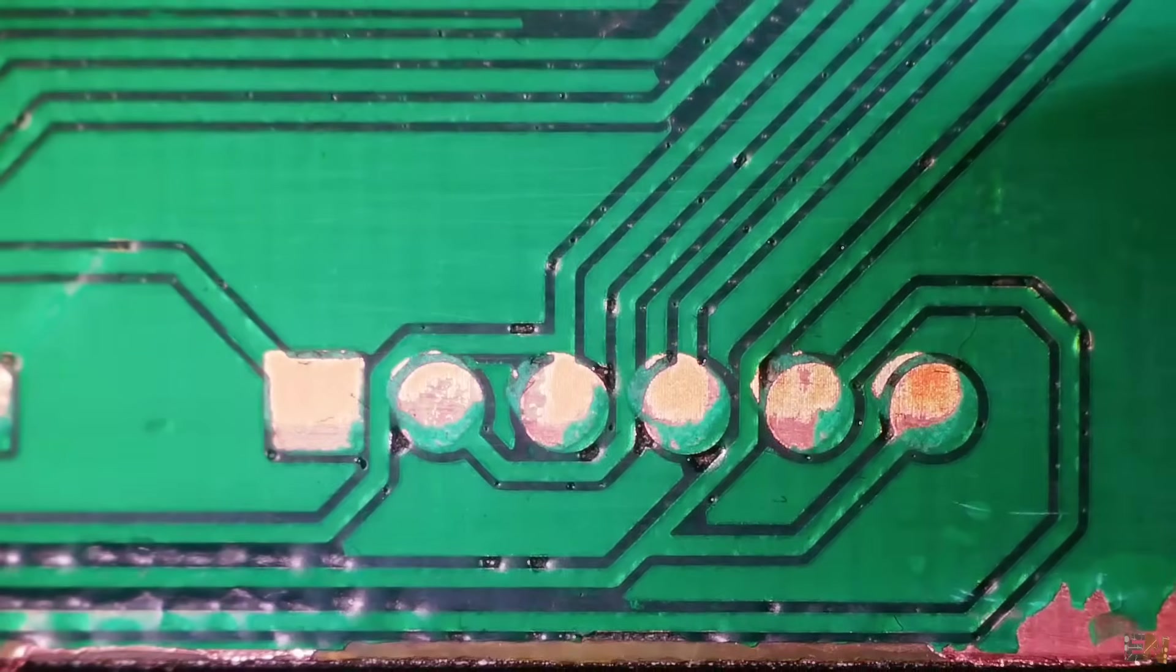So today we are making awesome homemade PCBs with very good tracks of 0.2 millimeters but also the stainless steel stencil. Test it out and see the results.